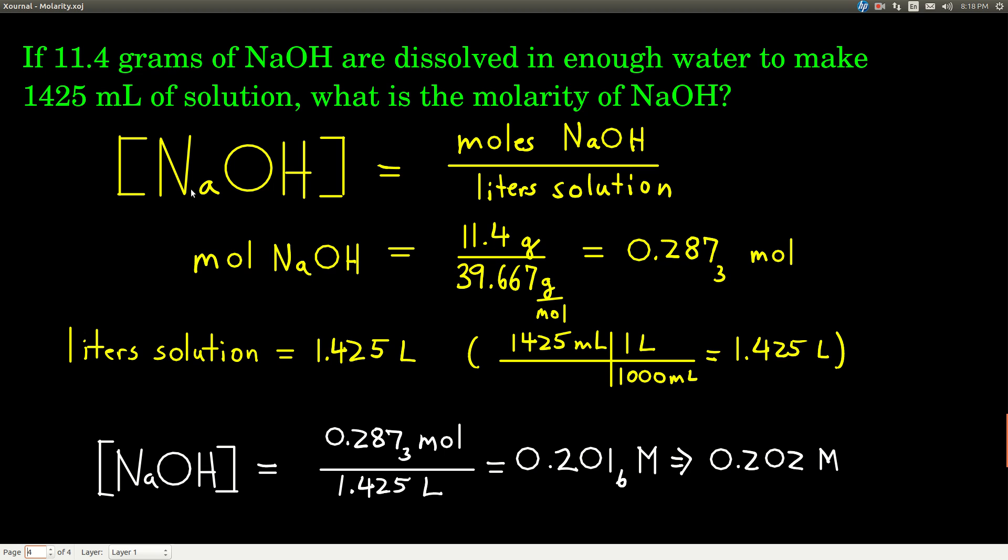Liters of solution, well, here's the thing. We convert in chemistry so often between milliliters and liters that if I have milliliters, I know to make that into liters, I just move the decimal three to the left, or divide by 1,000. Same thing. So we have 1.425 liters of solution. We divide the two.